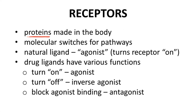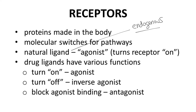Receptors are also proteins made in the body. Receptors are switches that control biological pathways — they can turn on or off a pathway. Molecules that control the switch are called ligands. The endogenous ligand in the body that binds and turns on the receptor is an agonist.